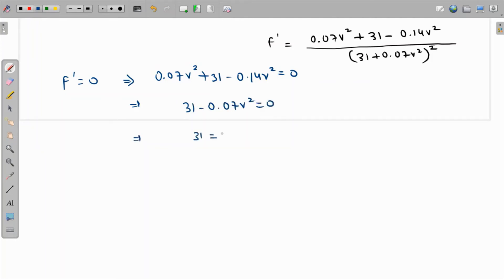We have 31 = 0.07V², which means 0.07V² = 31. The value of V² is 31/0.07. Using a calculator, 31 divided by 0.07 gives us V = √(31/0.07) = 21.04.